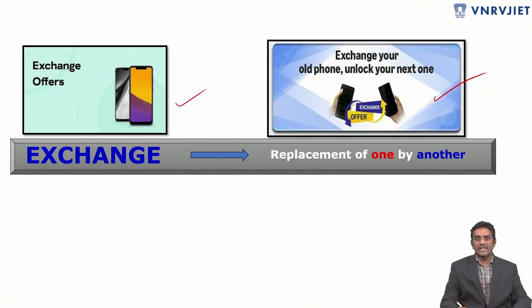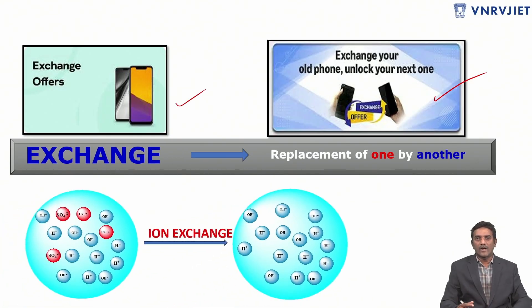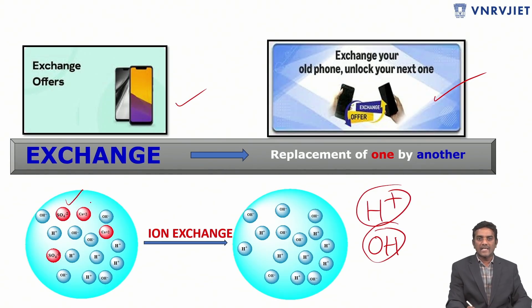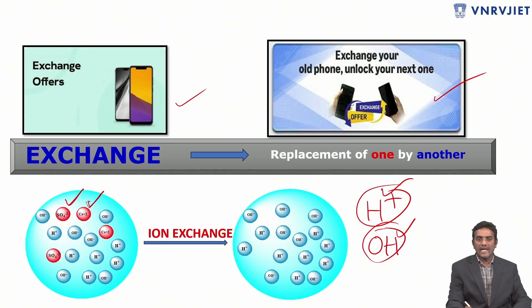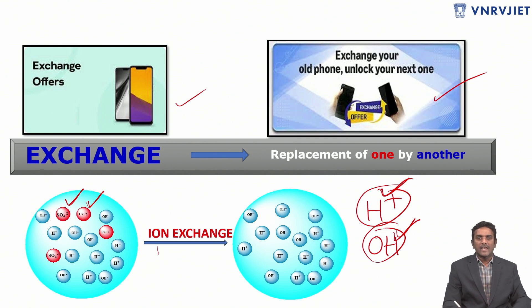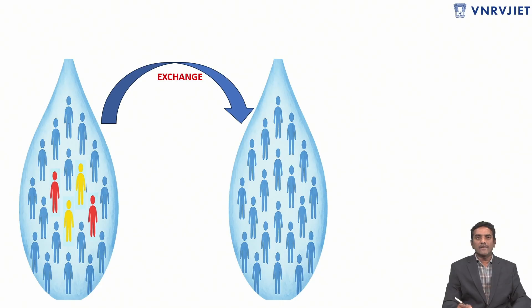In the same way, if water contains unwanted ions, we must remove those ions and exchange them with other ions which are useful for water. In general, water contains H⁺ ions and OH⁻ ions. If any unwanted ions are present, like calcium or sulfate, those must be removed and replaced with H⁺ ions and OH⁻ ions.